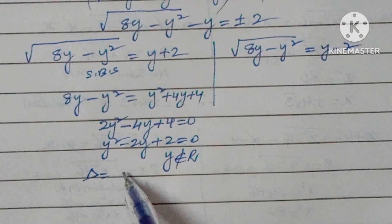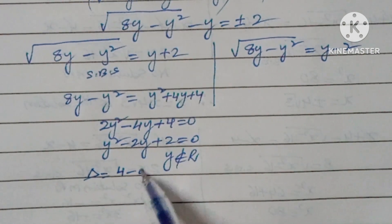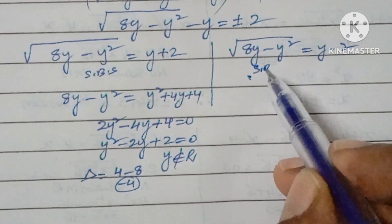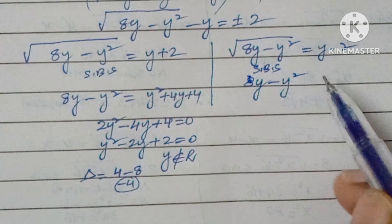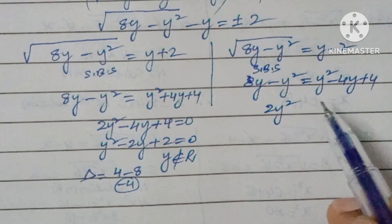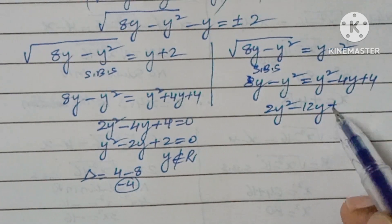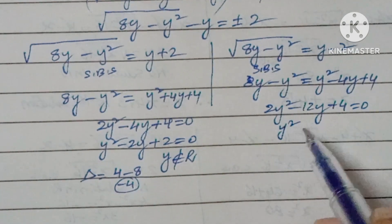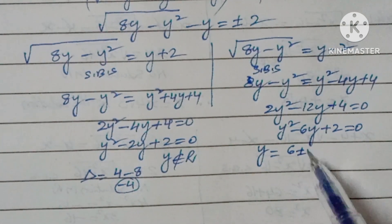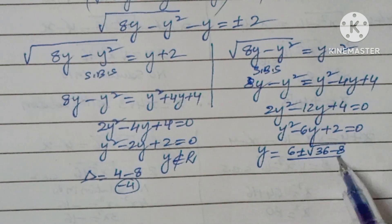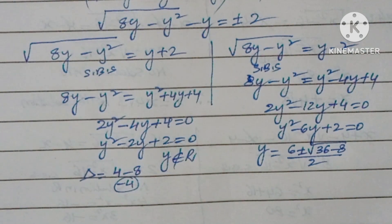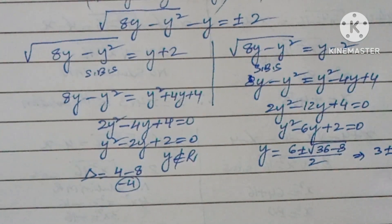Case 2: square root of (8y minus y squared) equals y minus 2. Squaring both sides: 8y minus y squared equals y squared minus 4y plus 4, giving 2y squared minus 12y plus 4 equals 0, or y squared minus 6y plus 2 equals 0. So y equals (6 plus or minus square root of 36 minus 8) divided by 2, which simplifies to 3 plus or minus square root of 7.